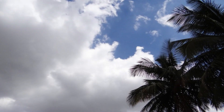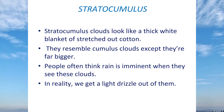Stratocumulus clouds are like white blankets stretched across the sky — like a blanket made of white cotton. They are larger than cumulus clouds with a well-defined base. People will think they are going to get very heavy rain when they see stratocumulus clouds, but no — even if you get a light drizzle, you are very lucky. They give the impression of heavy rain but rarely deliver it.